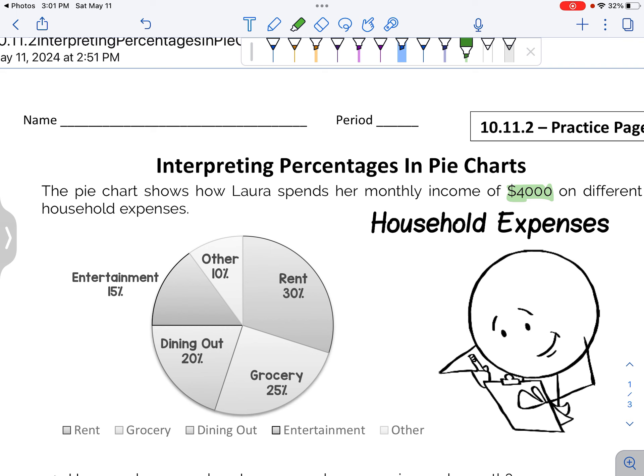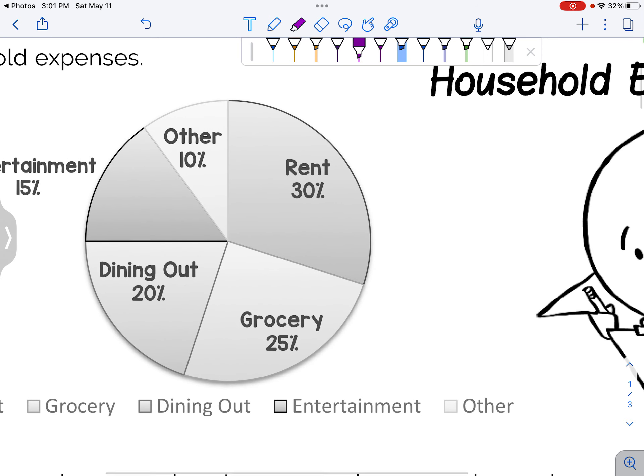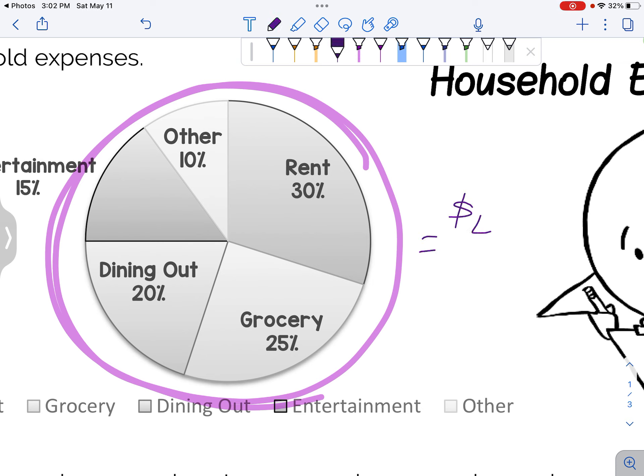So that's up here in these words. The pie chart shows how Laura spends her monthly income of $4,000 on different household expenses. So everything in here, if you change it into money, would equal $4,000. That's a pretty good household income.